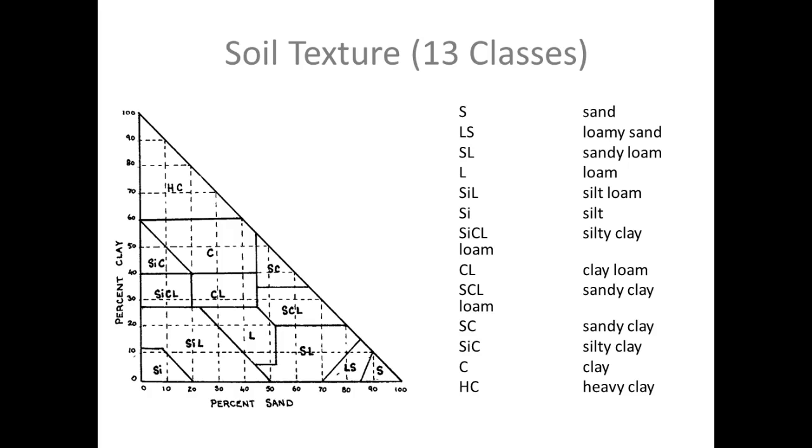Another way of looking at this texture triangle is a triangle that only shows clay and sand. So you would do this hand texturing process to identify the amount of sand and the amount of clay, and then the silt is sort of by default the remainder of the proportion.